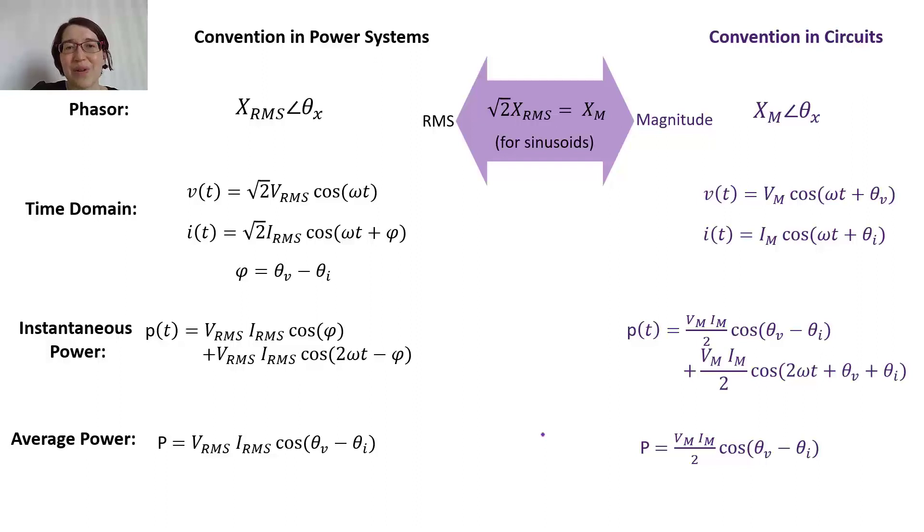And you'll see that the only real difference is going to be in the first, like the term in the front. And so if we're in the power system convention using RMS, we just have to multiply the RMS voltage times RMS current. But if we're using magnitude, we need to multiply those together and then divide by two. So just don't forget this two because if you do you're gonna mess up all your calculations. And there's a slight difference in the phase here, but actually it ends up being very minor.